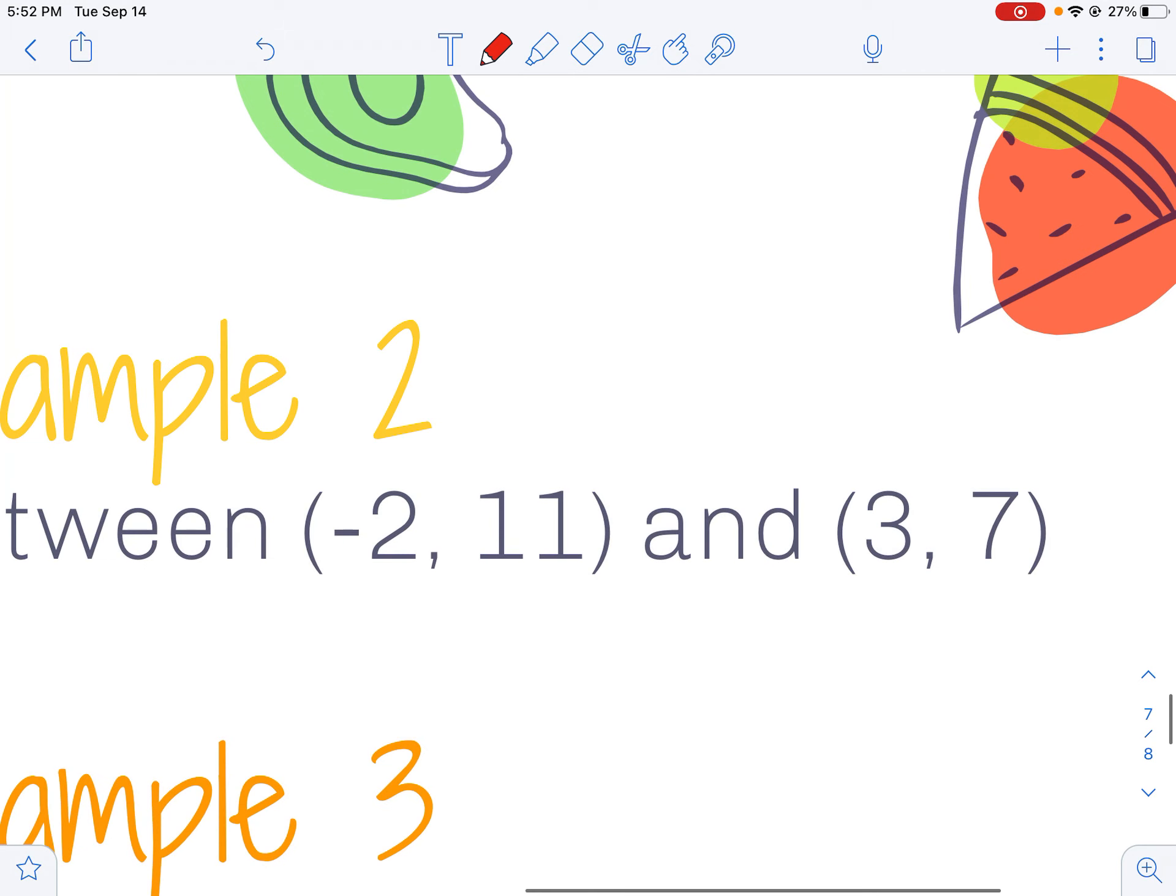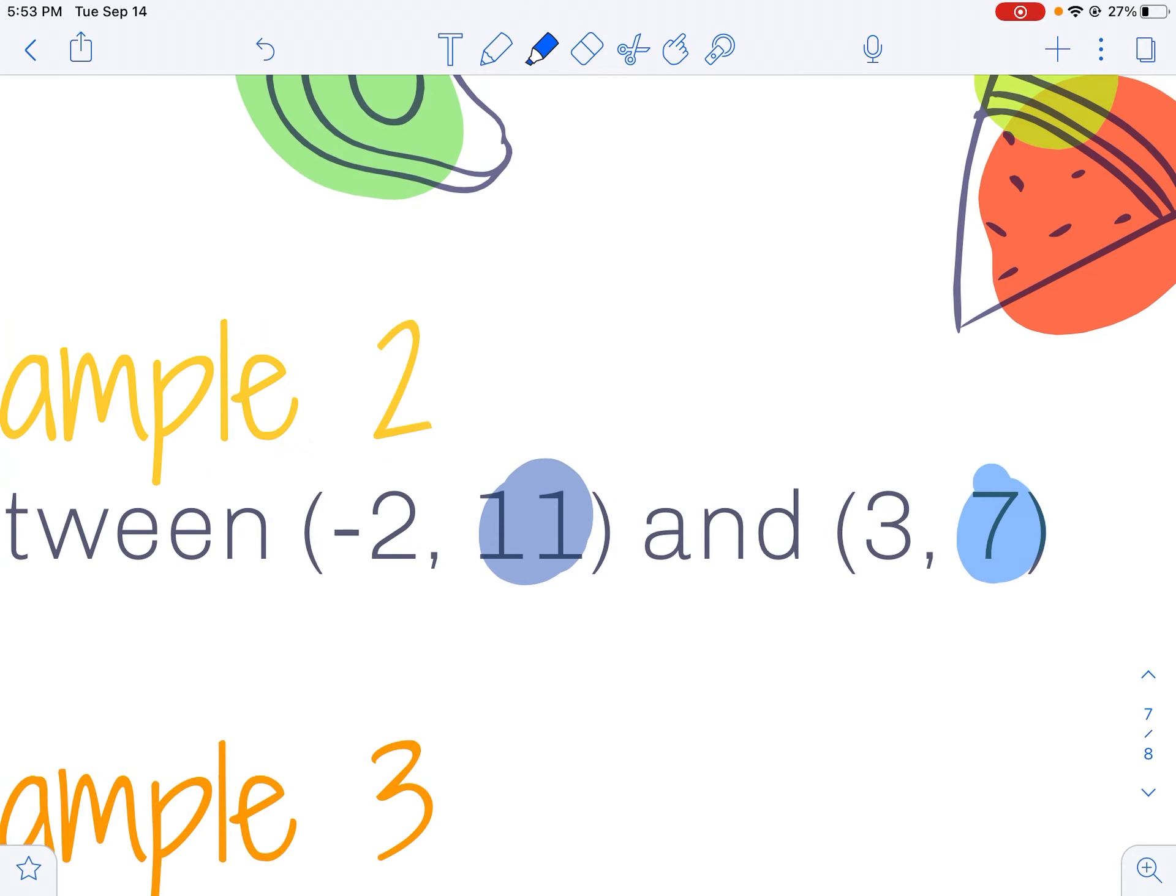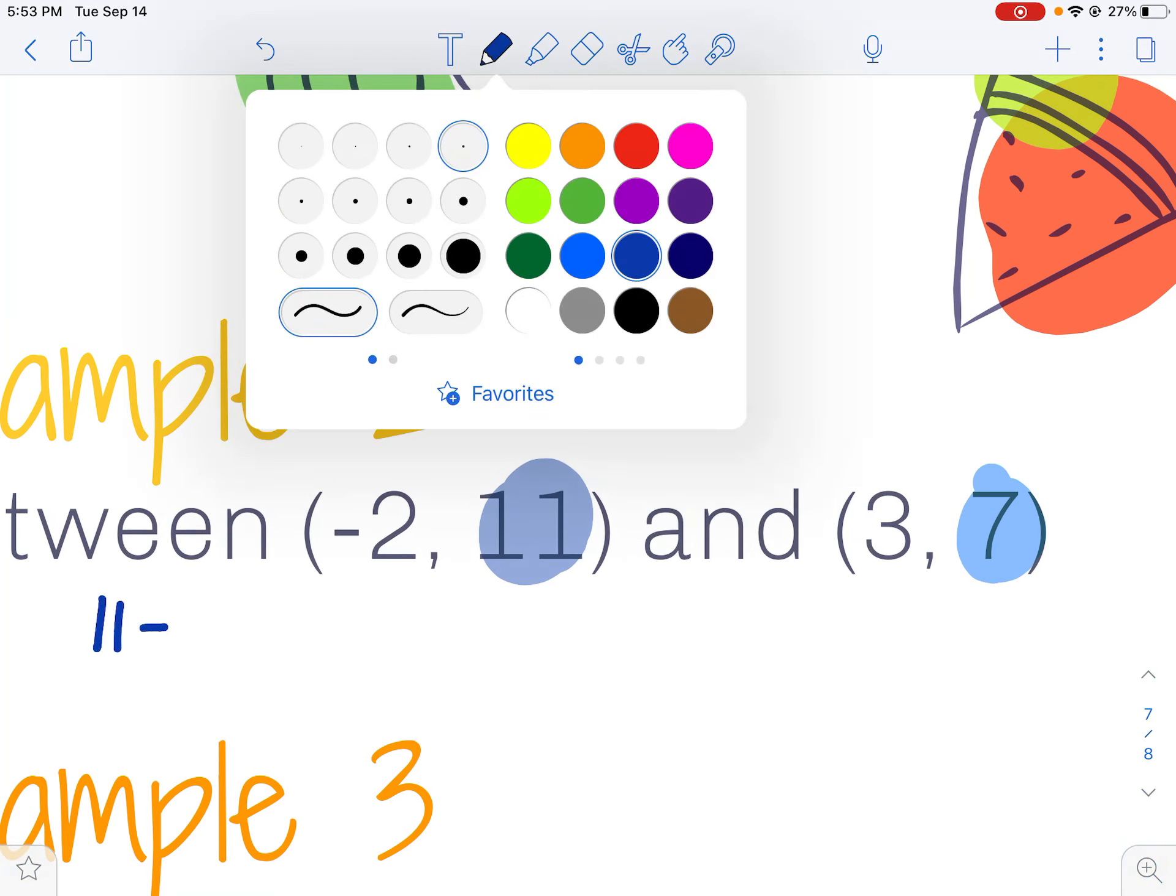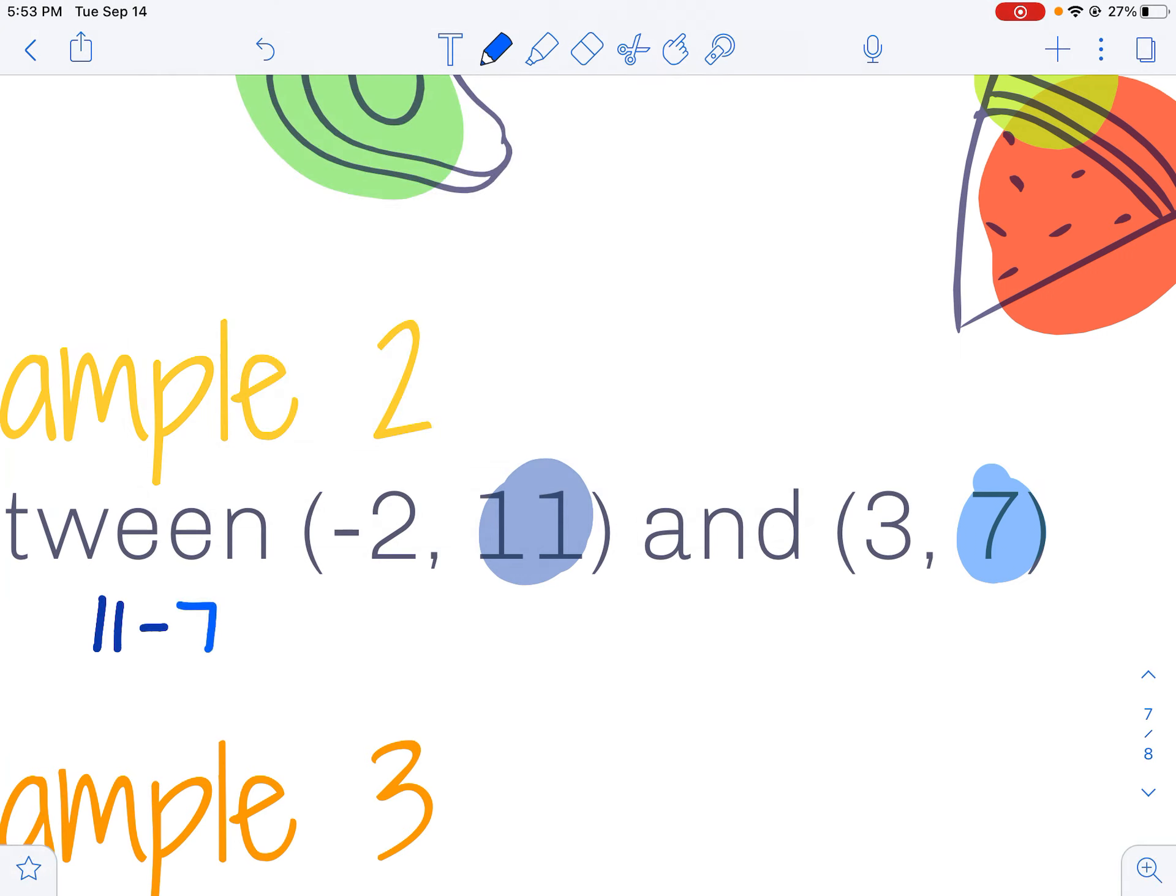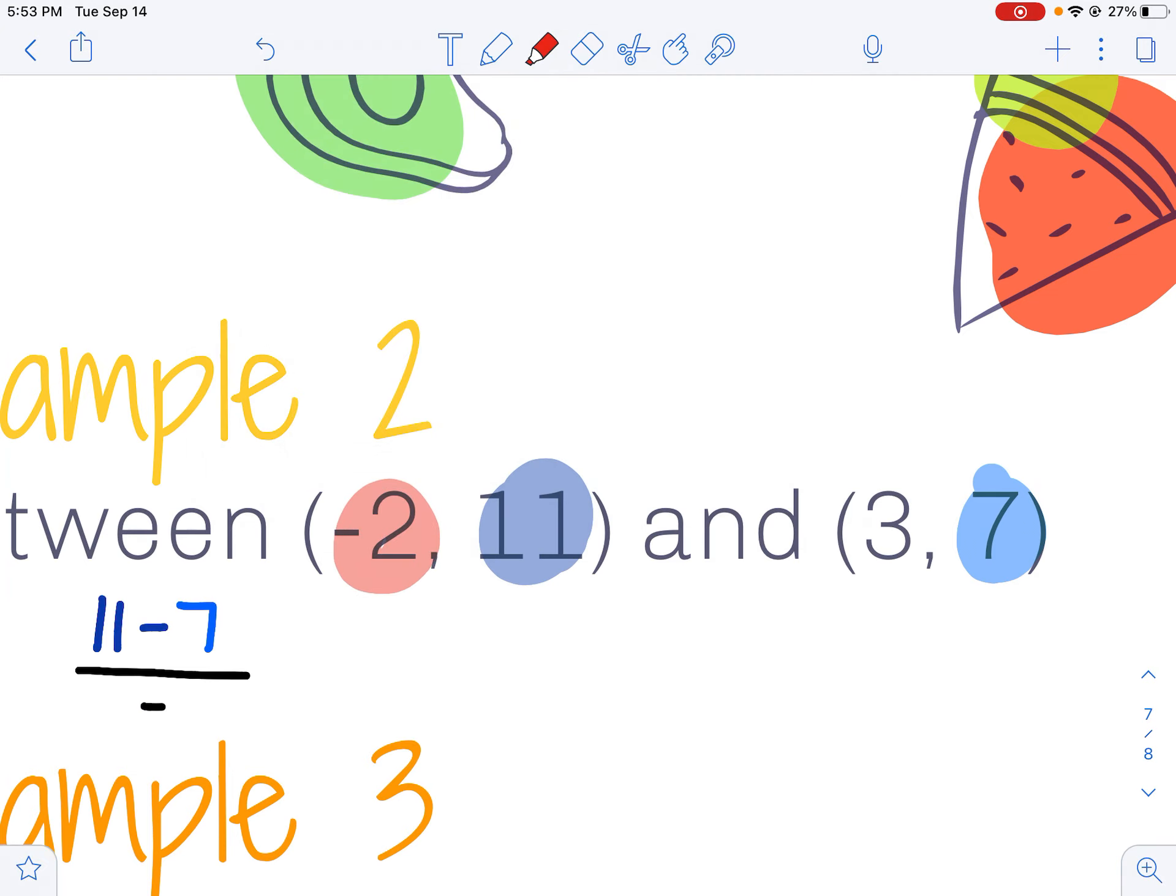When I'm given just the points, I'm going to go ahead and use that formula. So I'm looking just at my y values first. I'm going to do 11 minus my second y value, 7, and then I'll divide that by my x values.